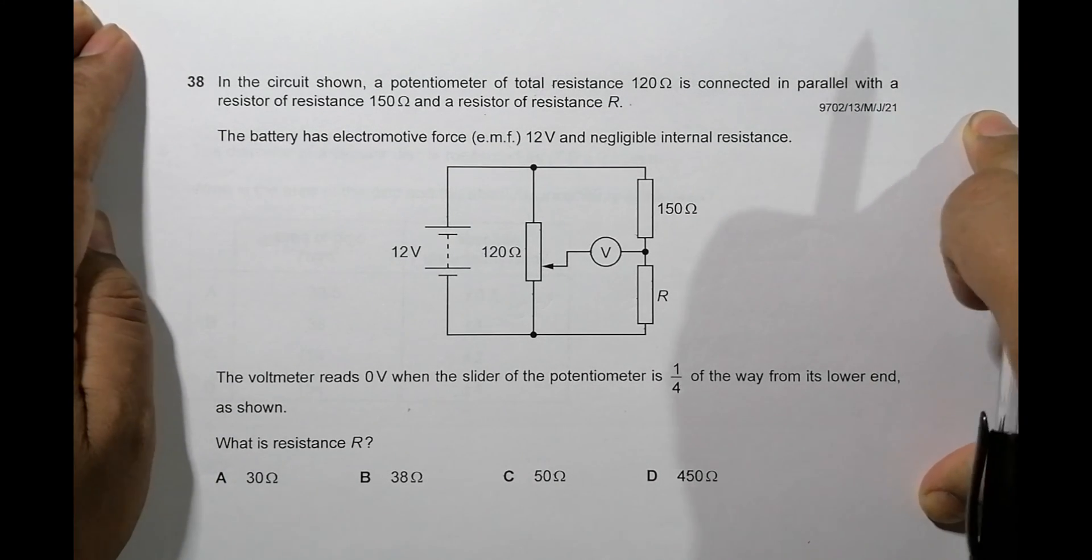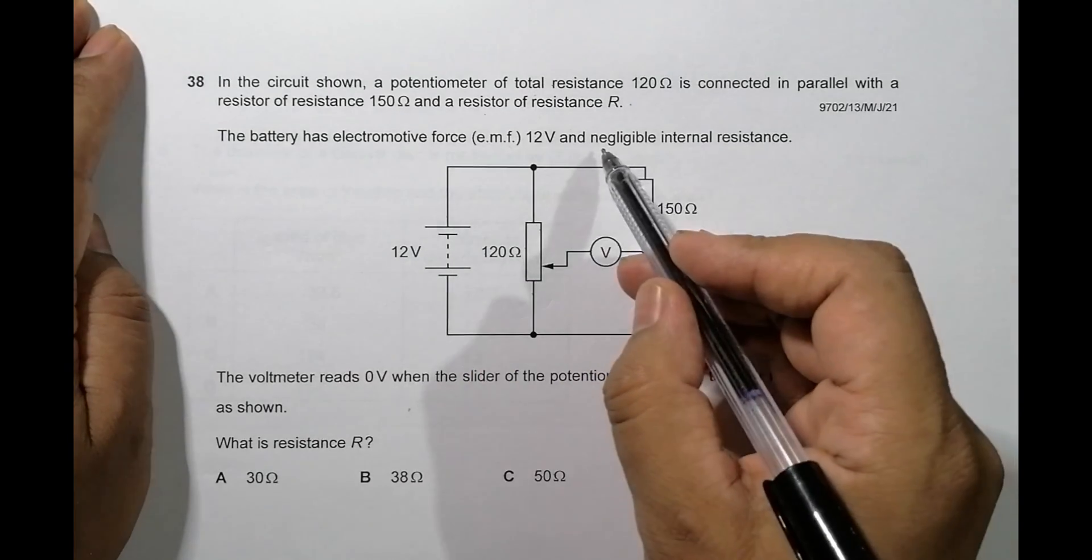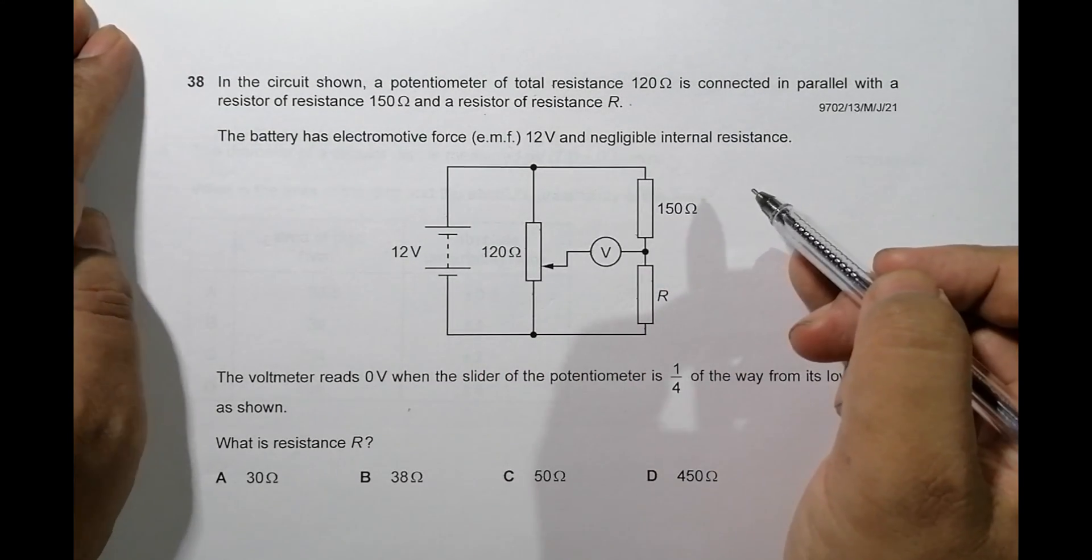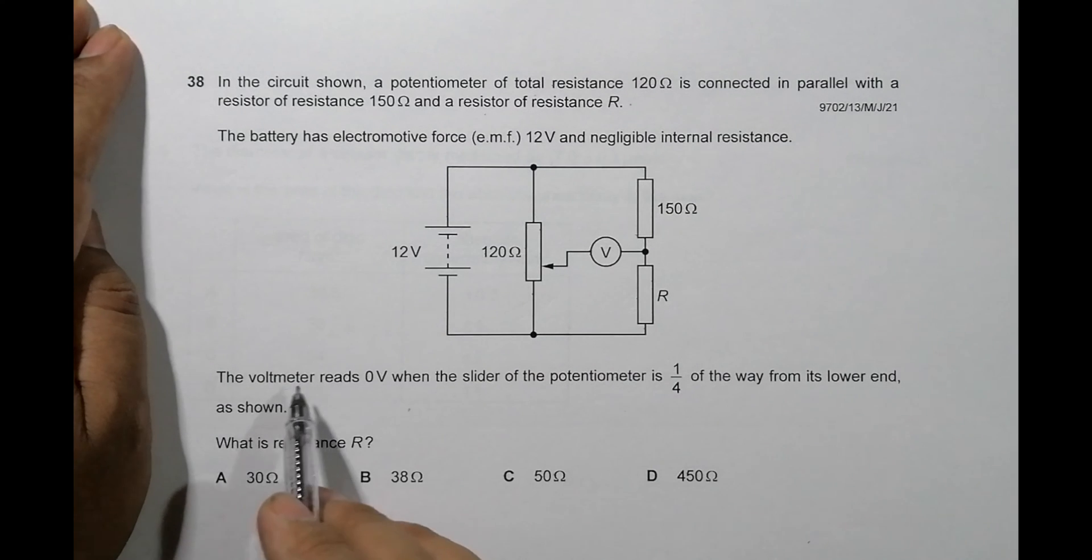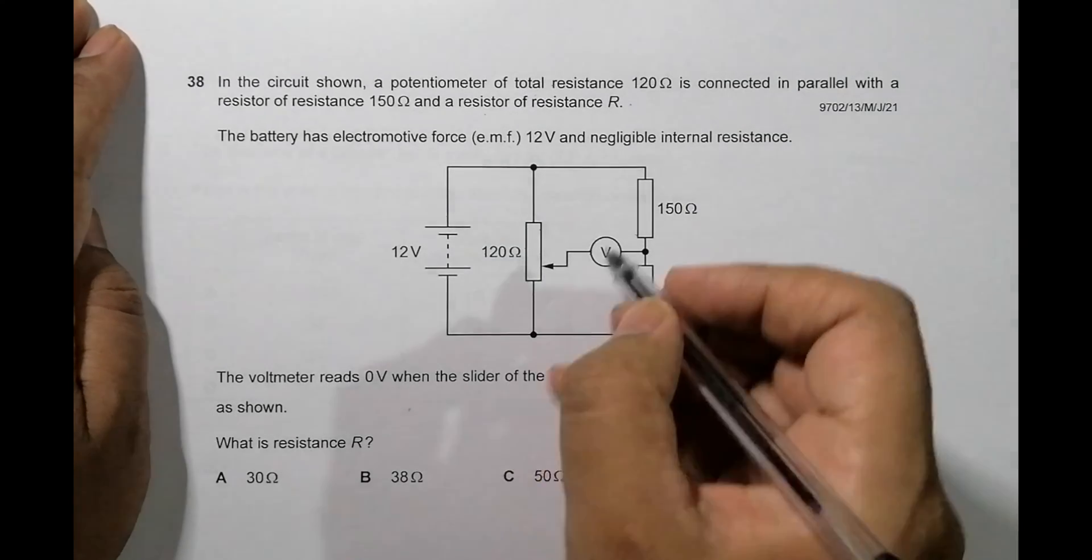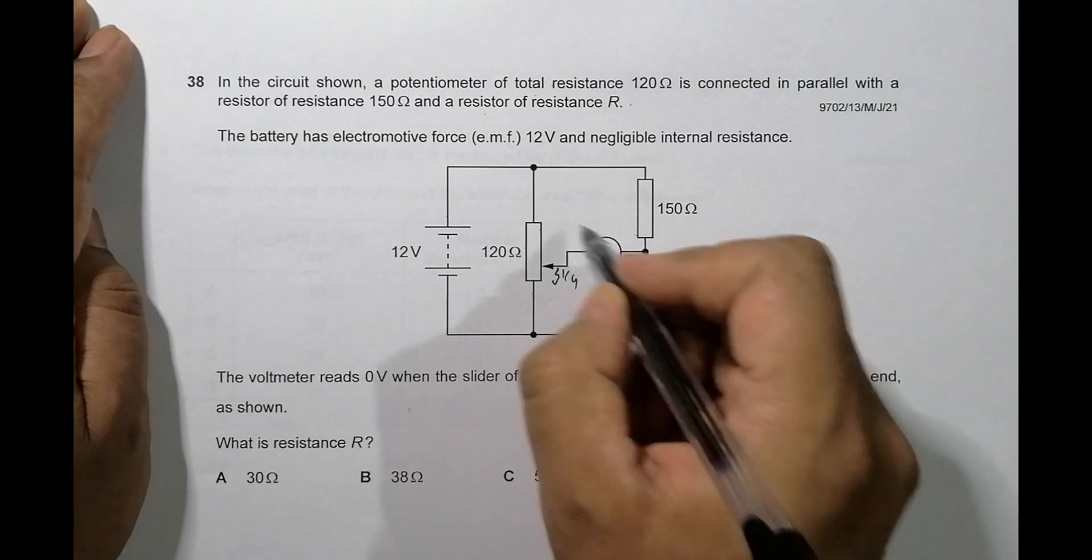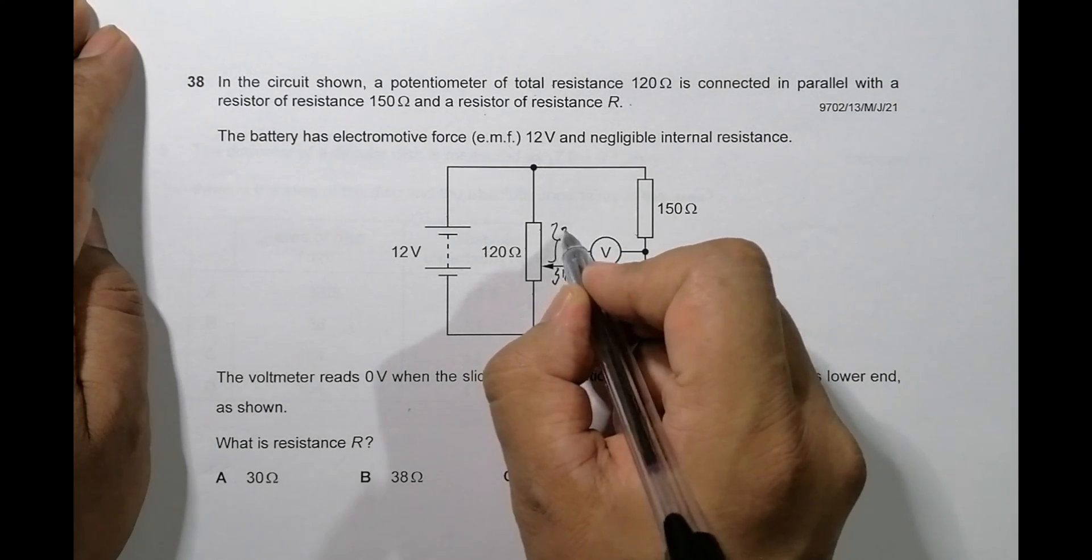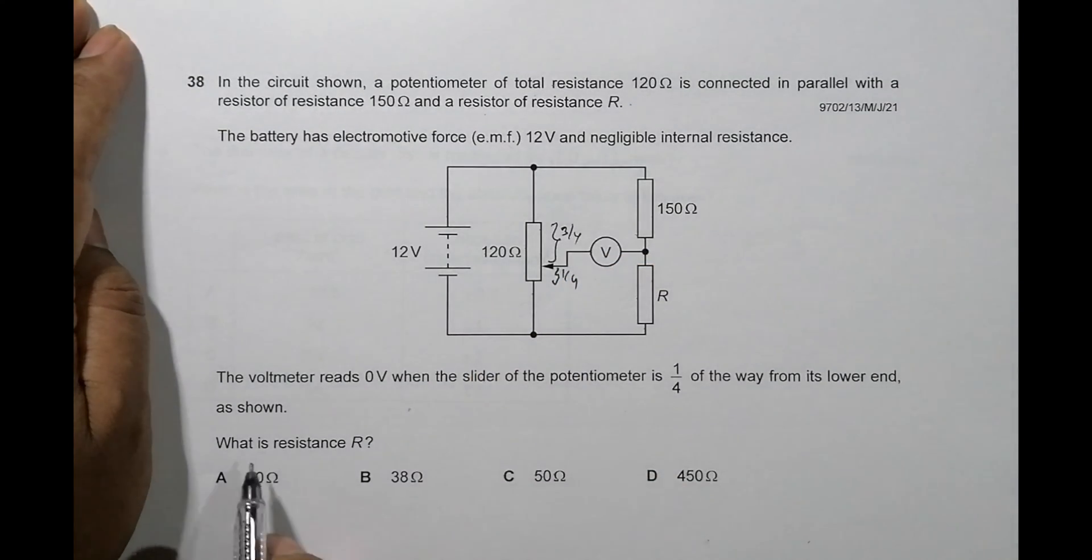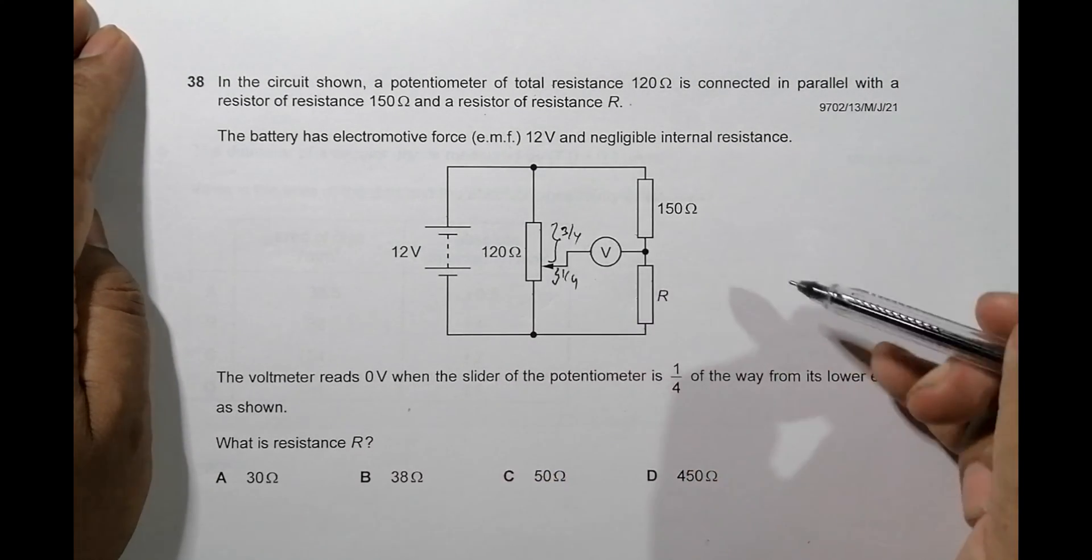The battery has electromotive force 12 volt and negligible internal resistance. The voltmeter reads zero when the slider of the potentiometer is 1 by 4 of the way from its lower end, so this is 1 by 4 and this is 3 by 4. What is resistance R? Zero means balanced condition when the slider is 1 by 4.